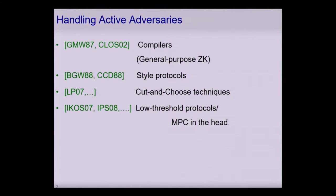MPC, as we already heard in this session, allows a set of mutually distrusting parties to compute a function of their inputs without violating the privacy of the inputs. Typically we distinguish between two types of adversaries: a passive adversary which tries to learn additional information by just looking at the protocol communication, and an active adversary which might send arbitrary junk to the protocol in order to gain some more information.